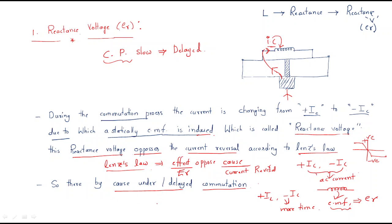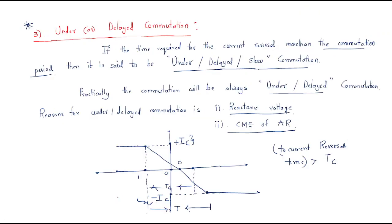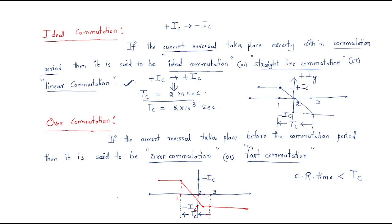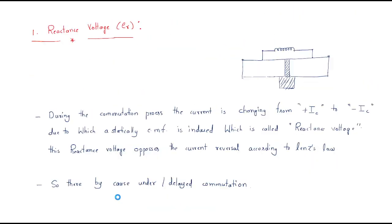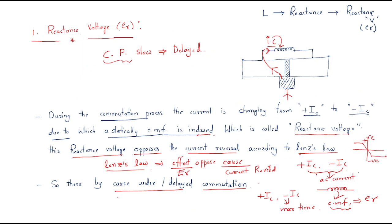So this is about the different types of commutation and the reasons for delayed commutation. We discussed the first reason — reactance voltage. I hope all of you understood the session. Thank you.